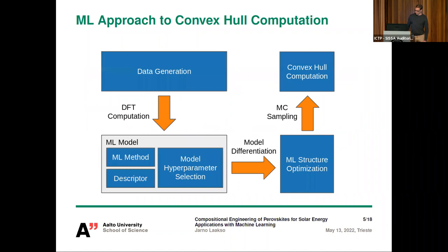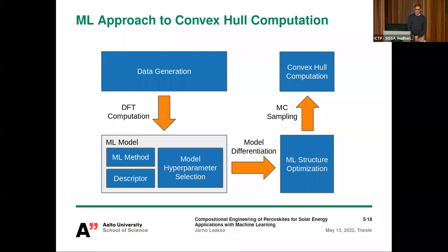Here is an overview of our machine learning approach. We start with data generation — a dataset of atomic structures for which we do DFT calculations to find the DFT energies. Then we fit a machine learning model that maps atomic structures to energy, differentiate this model so we can use it for structure optimization, and finally combine those structure optimizations with Monte Carlo sampling to find the convex hull for this perovskite material.